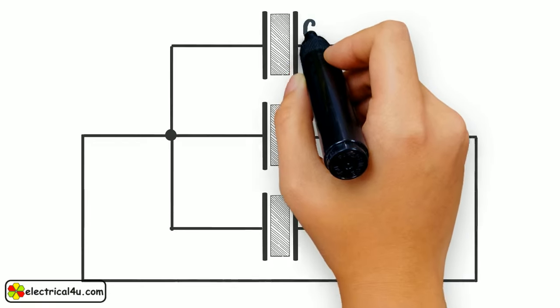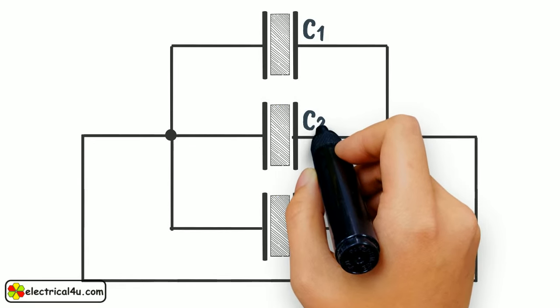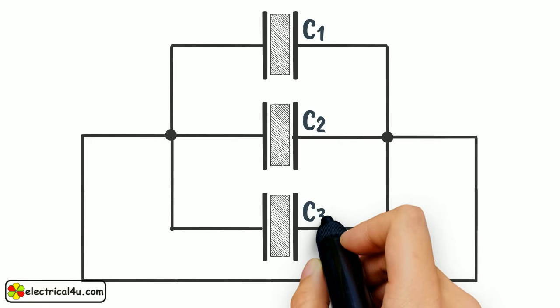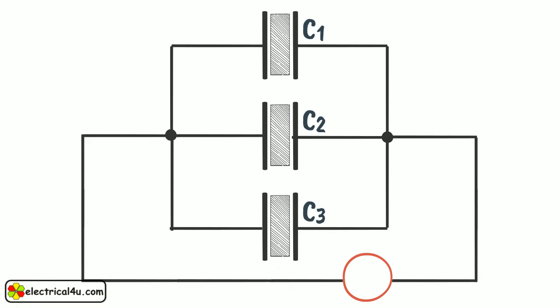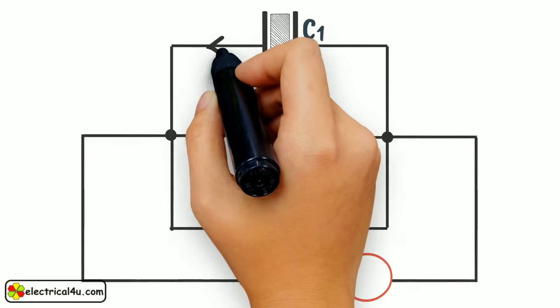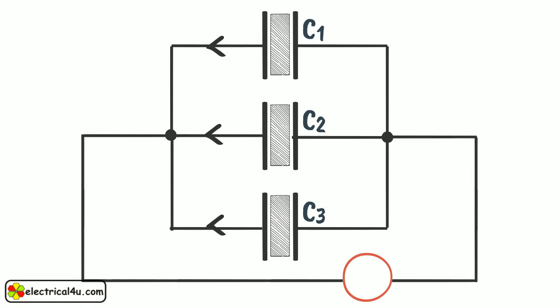Let us assume that C1, C2, and C3 are the capacitance of the capacitors respectively. Here the source will get three parallel paths to pass current.